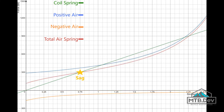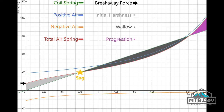This example shows the spring curve of a shock with a high volume negative air chamber. The overall slope of the total air spring is closer to that of the coil spring, but the breakaway point is higher than with the smaller negative air spring. This is due to the fact that the negative air spring ramps up similarly to a positive air spring — the lower the volume, the higher the compression ratio and the more it resists being compressed towards the end of its stroke. Simply increasing the volume of the negative air chamber has resulted in a harsh initial stroke and top out.